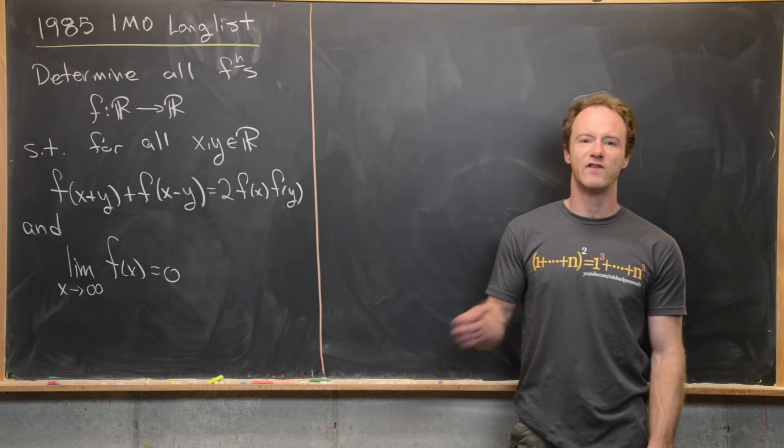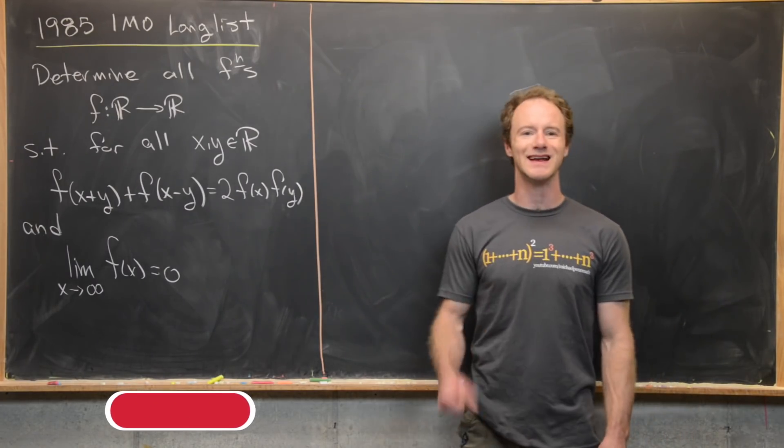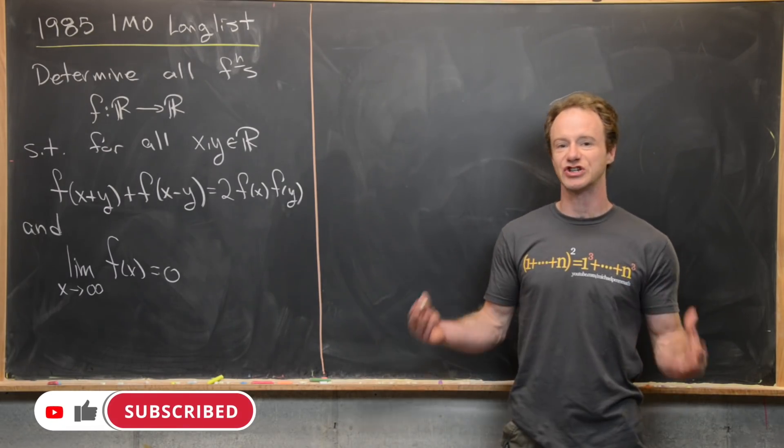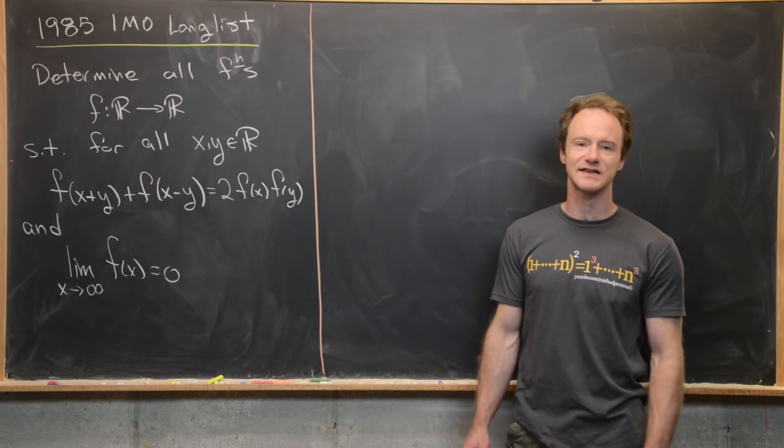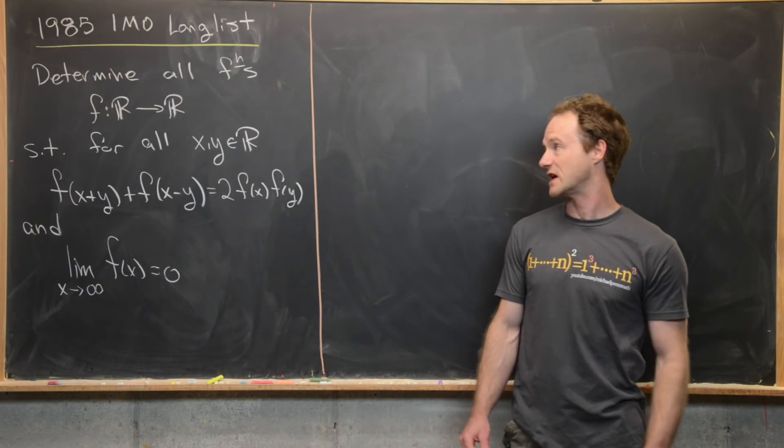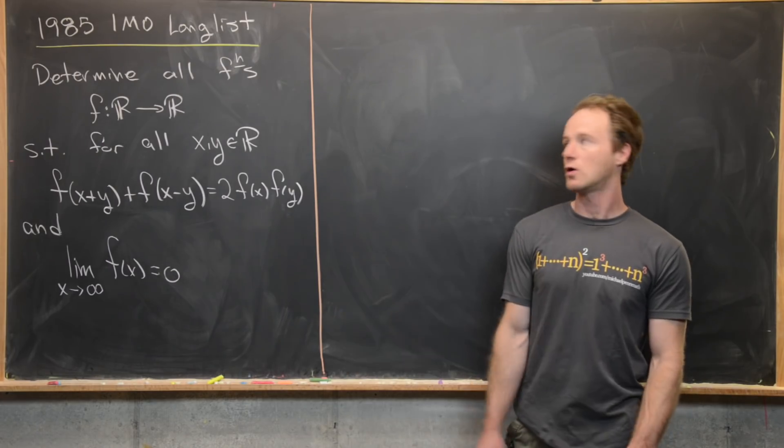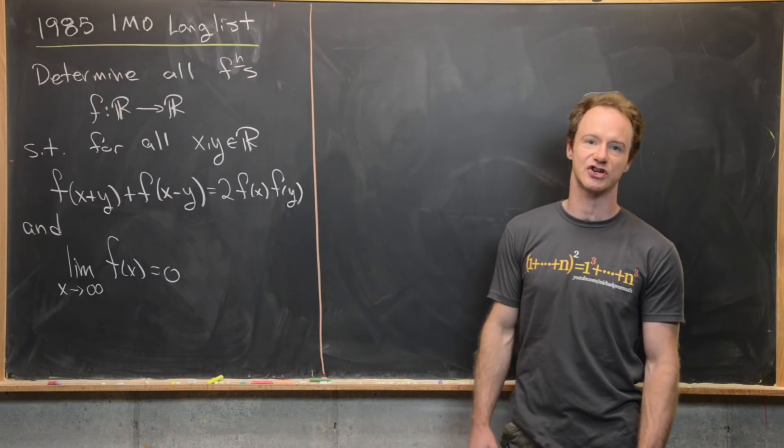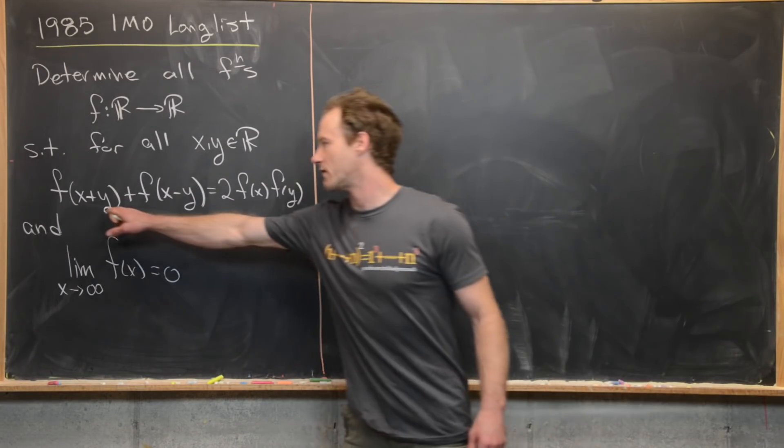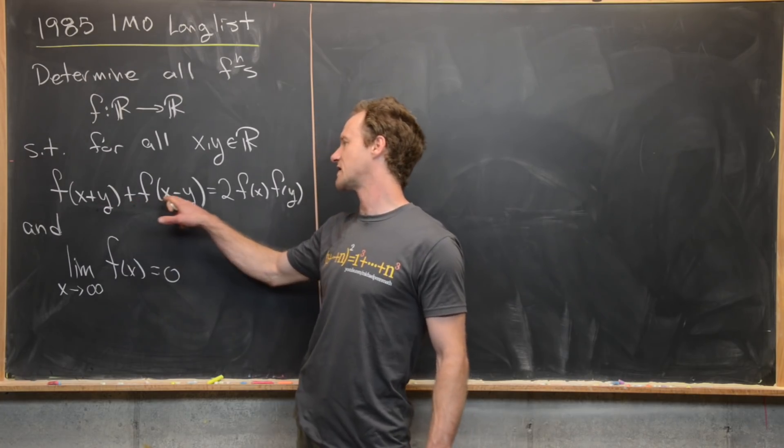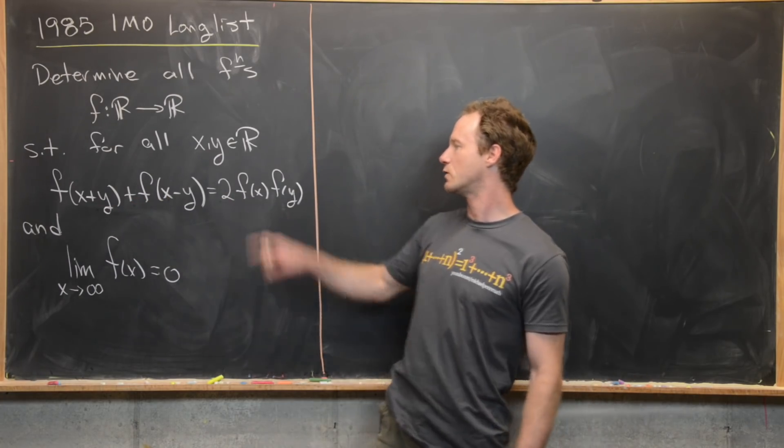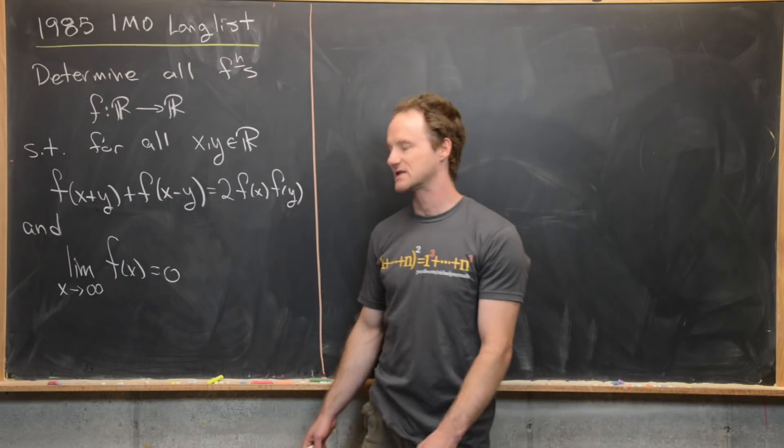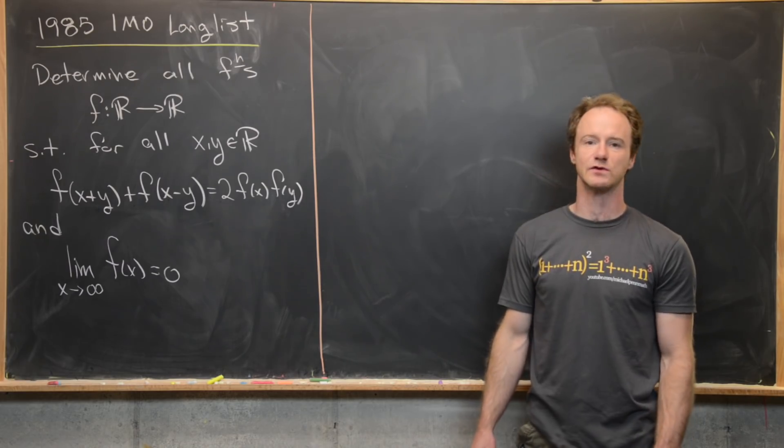Here we're going to look at a nice problem involving a functional equation that comes from the 1985 International Math Olympiad long list. So that means it was suggested for this contest, but it didn't make the short list or the exam itself. Our goal is to determine all functions of real numbers that satisfy these two conditions: f(x+y) + f(x-y) = f(x)f(y), and the limit as x goes to infinity of f(x) equals zero.